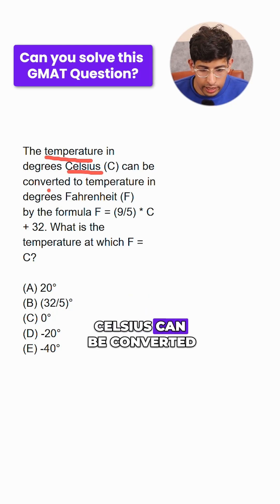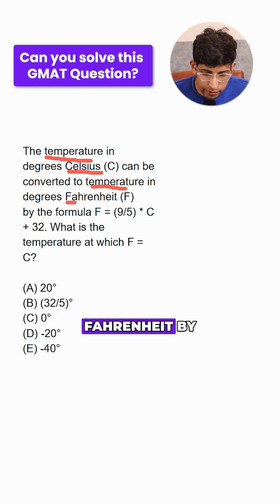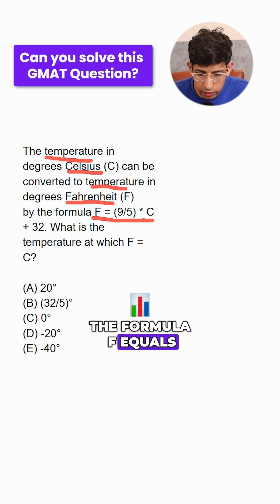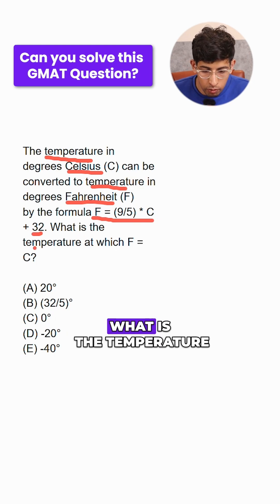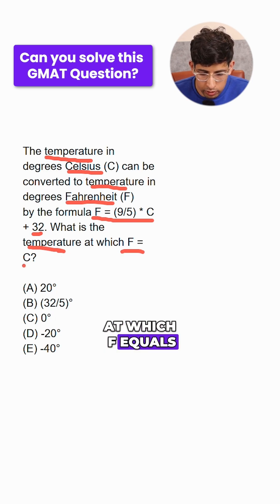The temperature in degrees Celsius can be converted to temperature in degrees Fahrenheit by the formula F equals 9 by 5 times Celsius temperature plus 32. What is the temperature at which F equals C?